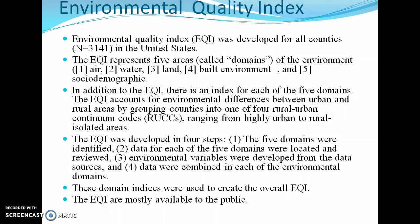What is Environmental Quality Index? Environmental Quality Index was developed for all counties in the United States. Around 3141 counties have participated in the Environmental Quality Index. EQI represents five areas of environment: first is air, second is water, third is land, fourth is built environment, and fifth is social demographic. These are called as domains for Environmental Quality Index.